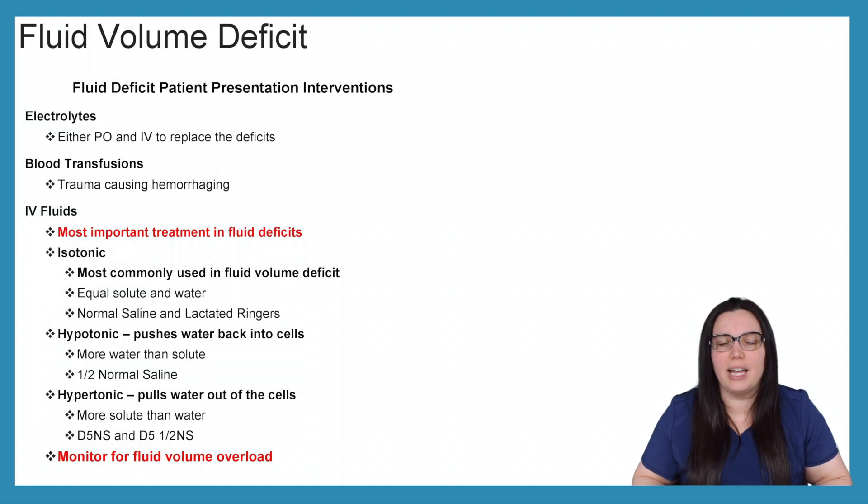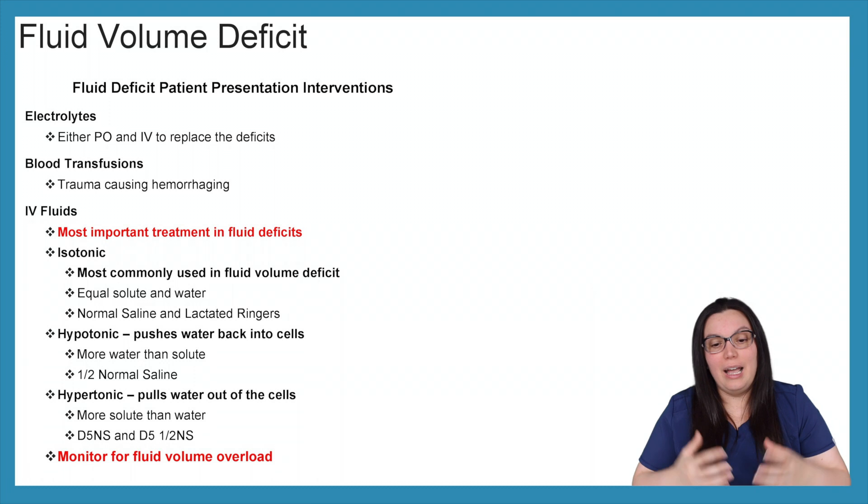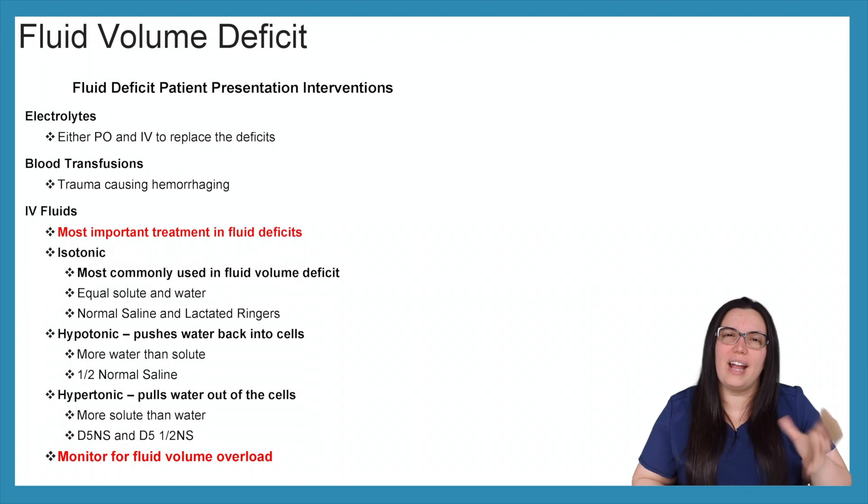IV fluids is the most important treatment when it comes to fluid deficits. Isotonic solutions specifically is the most commonly used fluid volume deficit treatment because there's no shifts between the cellular and extravascular spaces when it comes to replacing those fluid losses. So you have equal solute and water, and normally you'll see normal saline and sometimes lactated ringers depending on what's going on with their electrolytes. Hypotonic solutions help push water back into the cell. So we're having that cellular dehydration. This really helps those shriveled up cells bounce back again and become nice and thick and moist and beautiful. So again, more water than solute and that's usually your half normal salines.